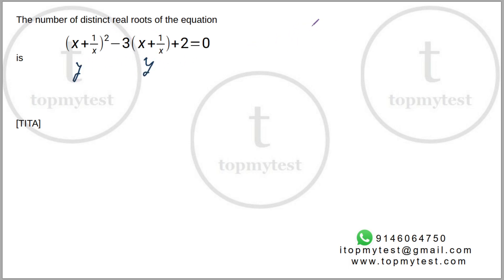So the equation becomes y² - 3y + 2 = 0. If you rewrite this, it factors as (y - 2)(y - 1) = 0. So y = 2 or y = 1.